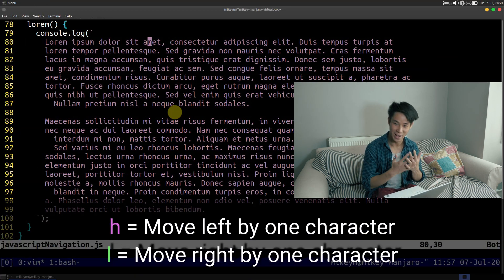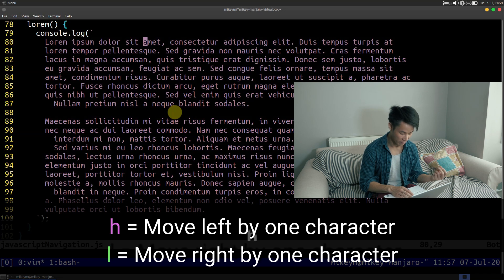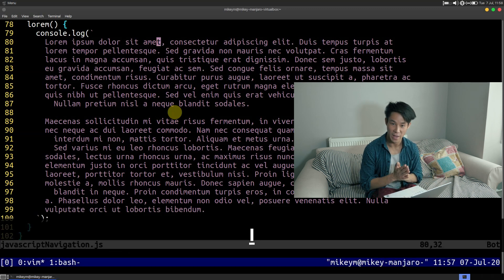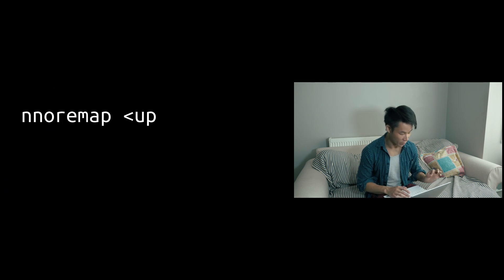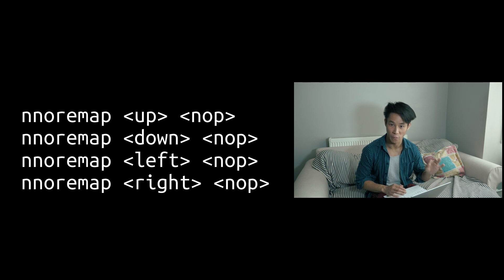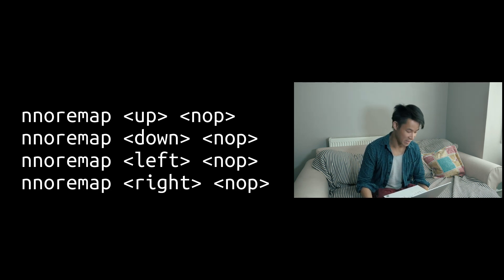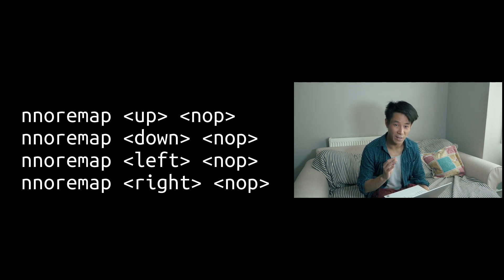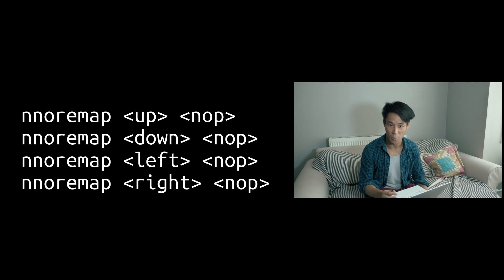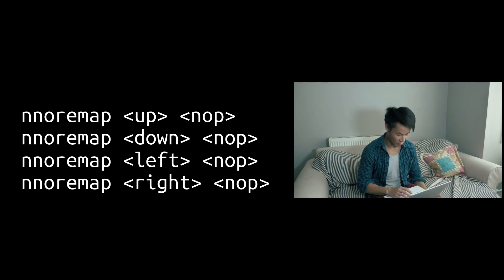Before anything else, I'd really get used to using W and B to move around horizontally, as it's going to save you a lot more time as opposed to just using H and L. H will take your cursor left one, and L will take your cursor right one — H, J, K, and L is Vim's version of the arrow keys. To prevent yourself from using arrow keys, I'd recommend putting the following four commands into your vimrc. This will completely disable the arrow keys, meaning you won't be able to use them when learning Vim — throw out those delicious arrow keys so you're forced to use J, K, H, L, W, and B.